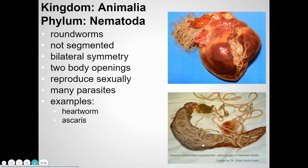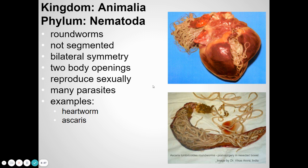Another parasitic roundworm is Ascaris, sometimes found in pigs. The eggs of this parasite can be in pork, and if it's not cooked properly those eggs can spread to humans, hatch into roundworms, and live in the intestine. They can be deadly — this image shows a person's intestine completely filled up with these worms.